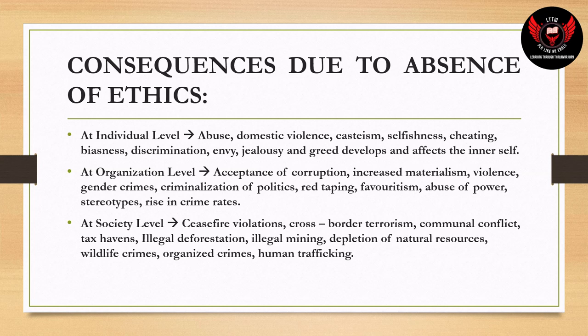At the society level: ceasefire violations, cross-border terrorism, communal conflict, tax havens, illegal mining, depletion of natural resources, organized crime, and human trafficking all continue to happen. During World War II, the Nazis showed no respect for other nations, resulting in gross human rights violations and war crimes. During the Delhi riots of 2020, mass looting of shops was seen, showing communal conflict.